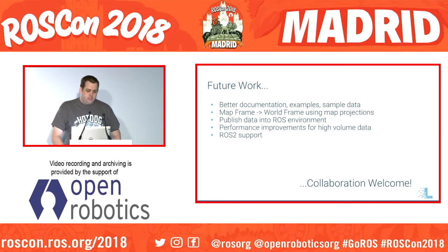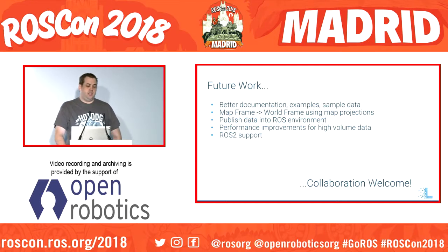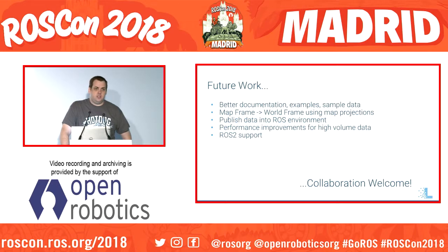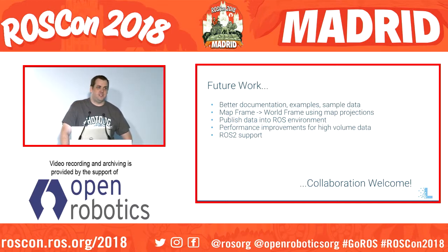There are a lot of things I want to do moving forward with this project. I first want to improve the documentation and add some example applications along with sample data. I want to look at the possible use of existing rectification tools to make it easy to bind map frame to world frame, which would enable merging robot data with numerous other sources such as aerial photography or satellite imagery. I want to experiment with publishing data back into the ROS environment for even more experimentation. I want to address some performance issues — admittedly, when you get to a dataset of over a million records it starts to be slow, taking a few seconds to render each frame. And I want to add ROS2 support. Your collaboration on all of these efforts would very much be welcome.